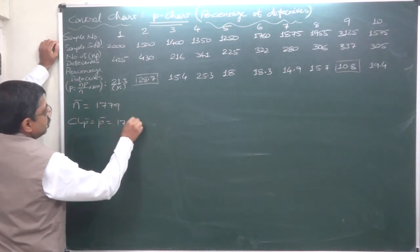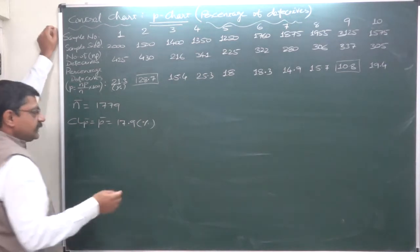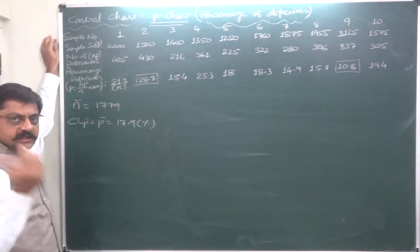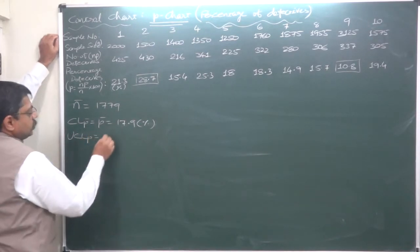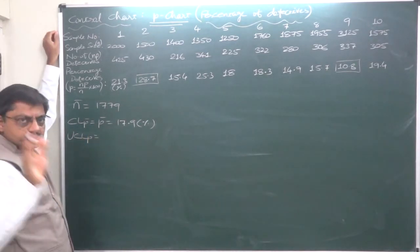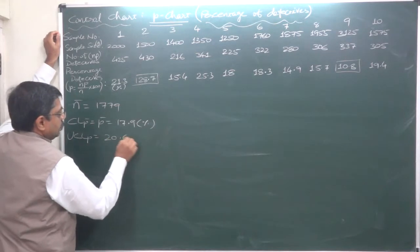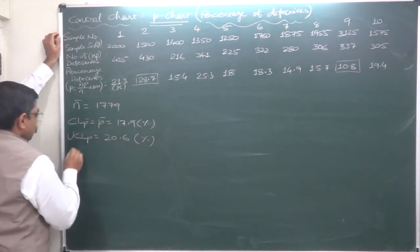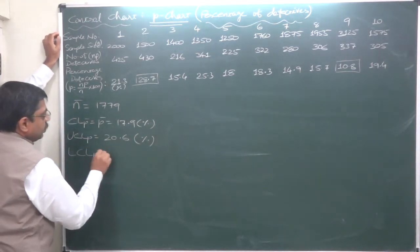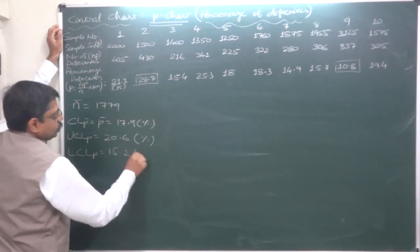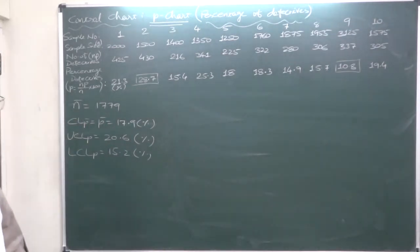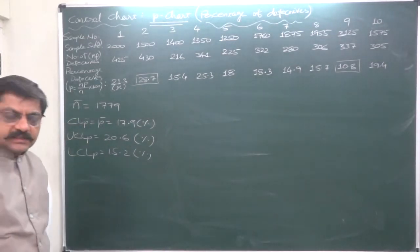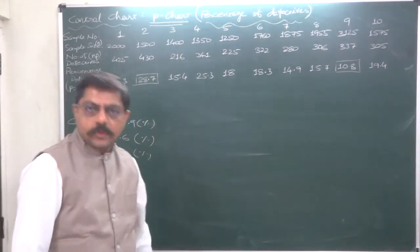The central limit was P-bar, that is 17.9. All these things are percentages I have already discussed in the previous lecture. This is just a summary so that you can relate very quickly, and it was 15.2.